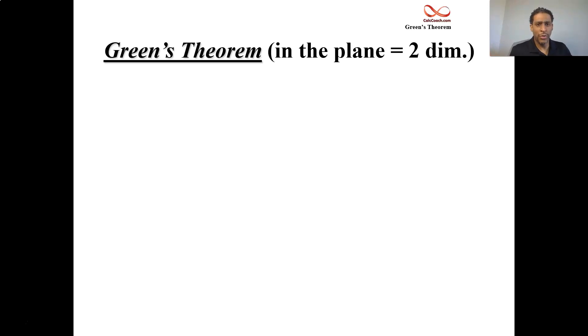Green's Theorem in two dimensions requires saying some things about the curve first. If your curve is piecewise smooth, smooth in pieces, a finite number of pieces, if your curve is simple, doesn't cross over itself, if your curve is closed and positively oriented, then it will bound a region, and we call that region R.